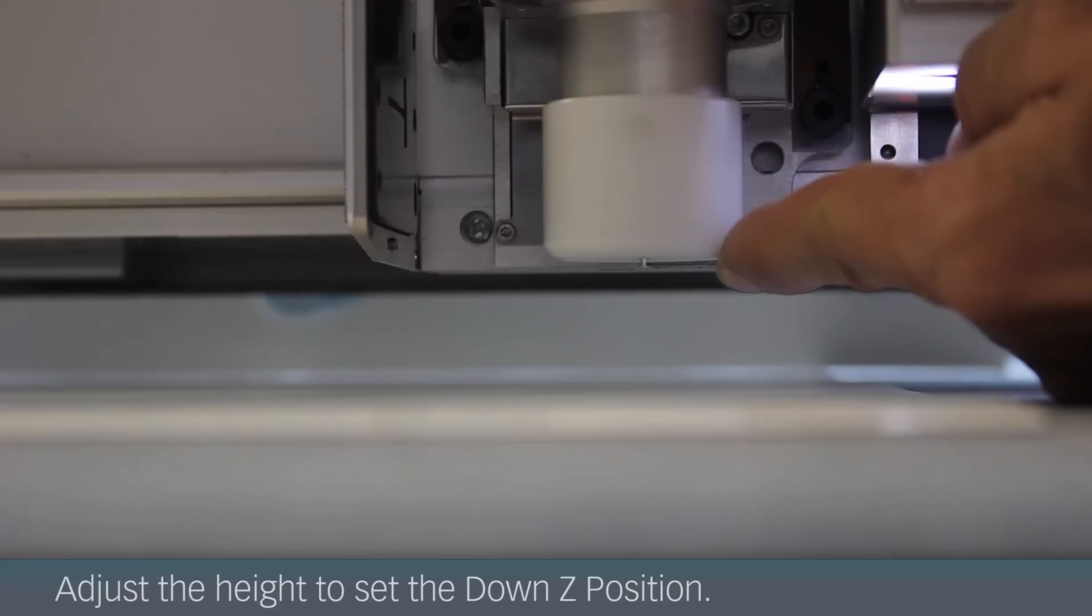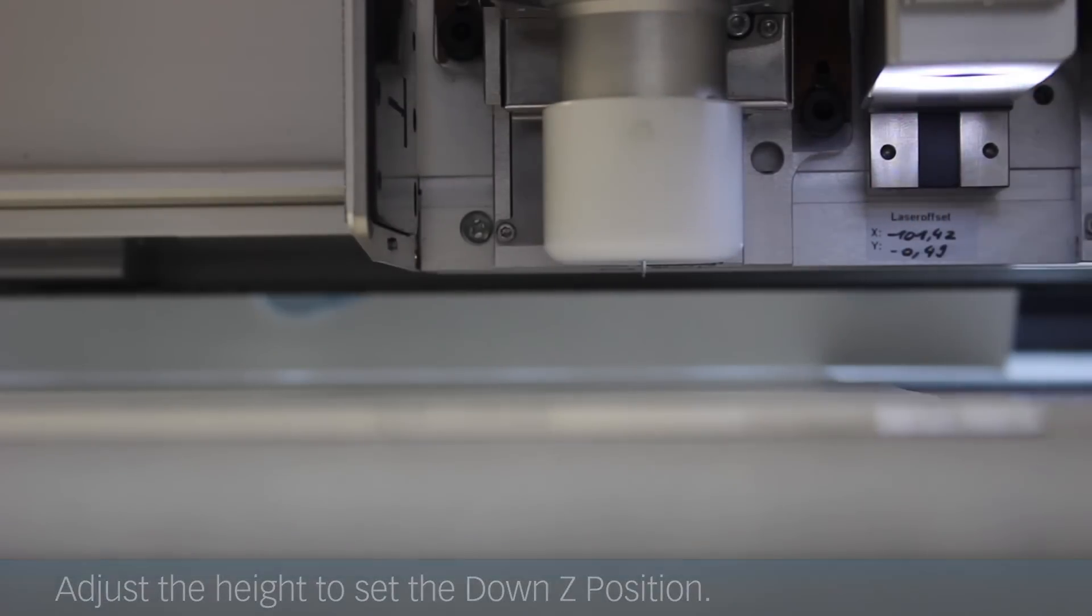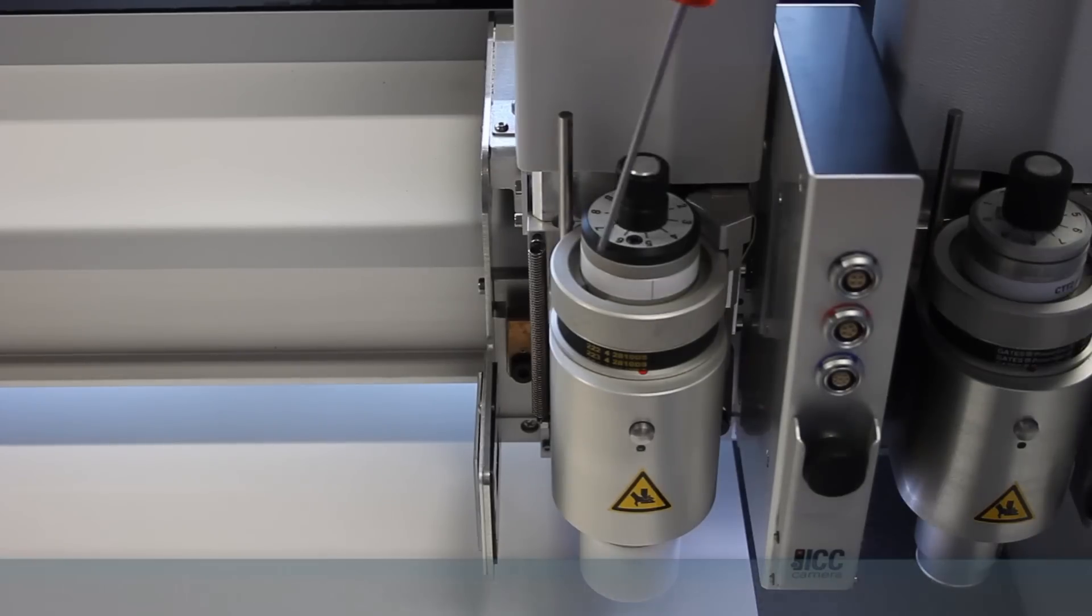Finally, we are setting the cutting depth. Use the adjustment wheel to set the heights and tighten the fastening screw.